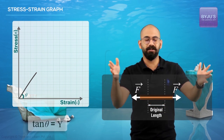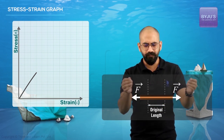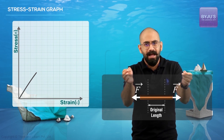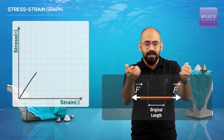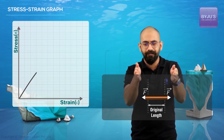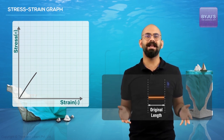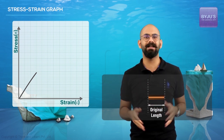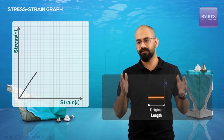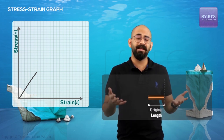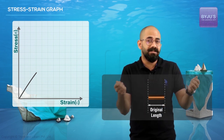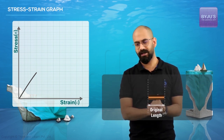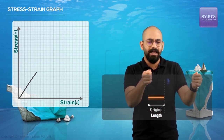The slope of this graph will be equal to Y, which is Young's modulus. Also, if I stop in between and bring it back slowly — that is, if I reduce the force slowly and let go at the end — it will come back to its original shape. The extension that we provide is reversible.